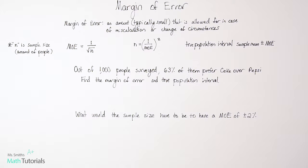In this video, we're going to be talking about margin of error. So we've got a definition here. Margin of error is an amount, and it's typically a small percent, a small amount, that is allowed for in case of miscalculation or a change of circumstances. So it's just like a little interval of error possibility.